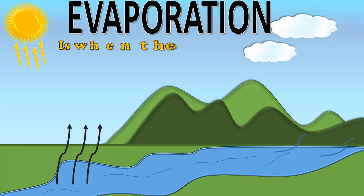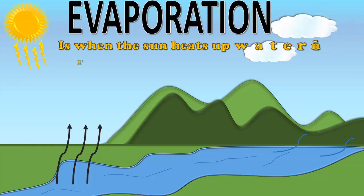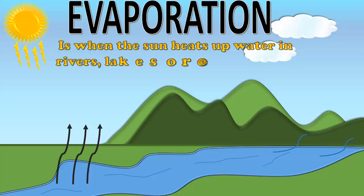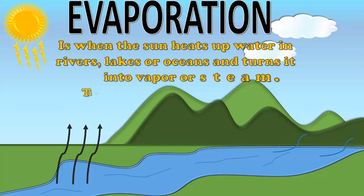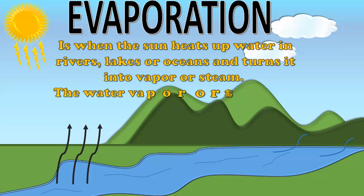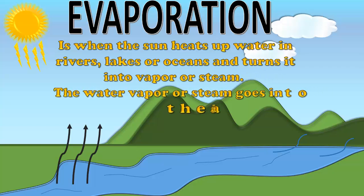Evaporation is when the sun heats up water in rivers, lakes, or oceans and turns it into vapor or steam. The water vapor or steam goes into the air.